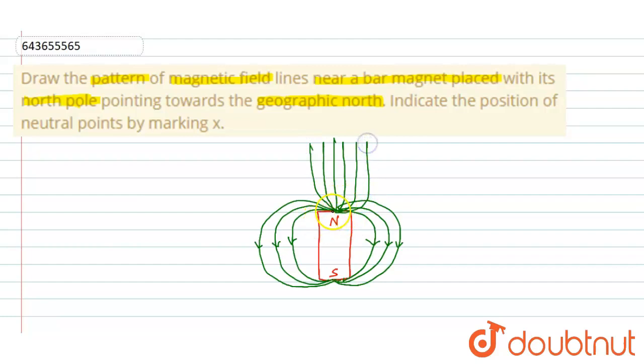Because here the north pole attracts the geographic north pole of the earth's magnetic field, the magnetic field lines are in this direction.